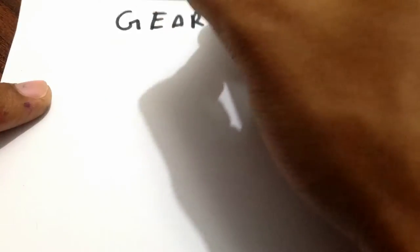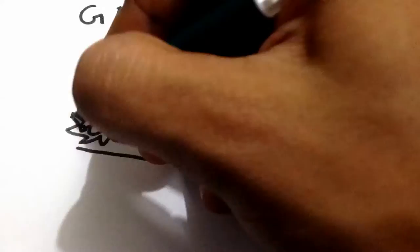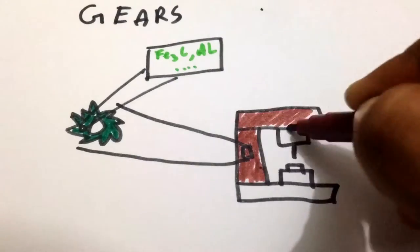No machine tools are complete without the use of gears. Gears are manufactured from both metals and non-metals like cast iron, brass, and aluminum. Generally, all gears are cut through gear generating processes.